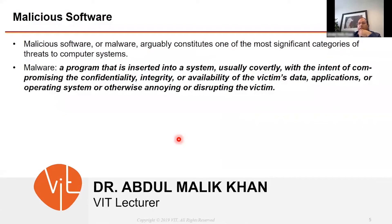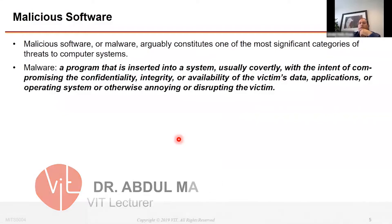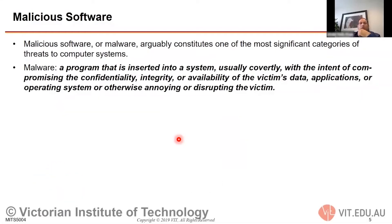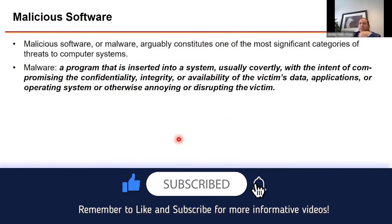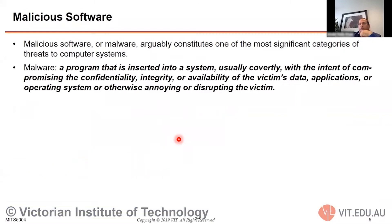What is malicious software? Malicious software is basically a code — a software code that has been created to cause havoc. That code is malicious, meaning it is unwanted and not good for your network, computer system, or data. Malicious software is also known as malware — the word malware simply combines 'malicious' and 'software'.